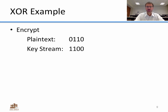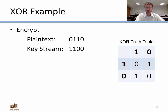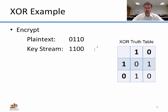Here's an encryption example. Plain text is 0110 and key stream is 1101 — we exclusive OR them bitwise. The truth table for XOR: 1 XOR 1 = 0, 1 XOR 0 = 1, 0 XOR 1 = 1, 0 XOR 0 = 0. So: 0 XOR 1 = 1, 1 XOR 1 = 0, 1 XOR 0 = 1, 0 XOR 0 = 0. Our cipher text is 1010.